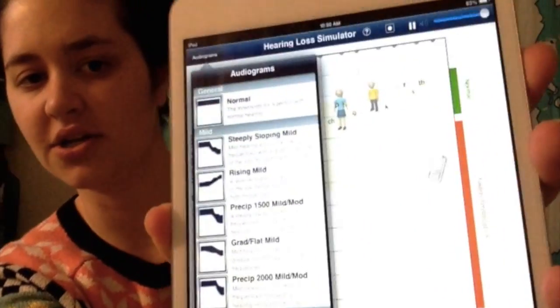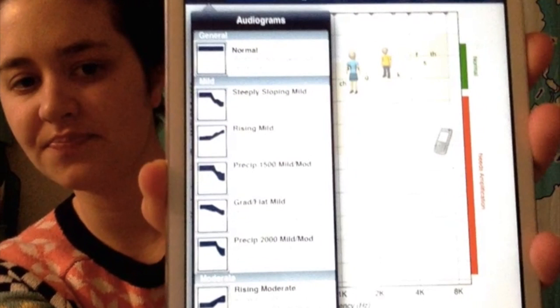You can also access all different types of audiograms. By choosing audiograms that closely resemble the audiograms that you're interpreting, you can get an idea of what a particular hearing loss might sound like and what certain sounds would sound like with that hearing loss.